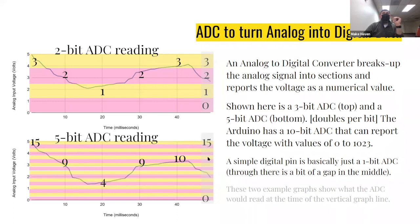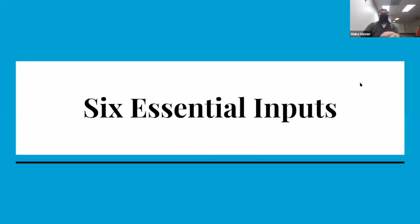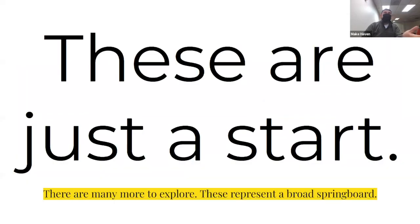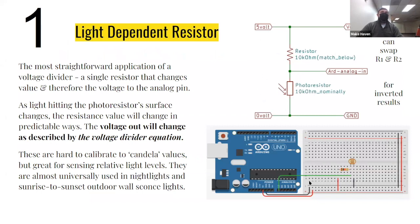Now let's talk about the six essential inputs — this is just the start; there are tons of things to explore. First is the light dependent resistor. In TinkerCAD you can see a photoresistor — it changes resistance based on the amount of light hitting it — in series with a fixed resistor. That fixed resistor is always the same, and the mathematical relationship is exactly the voltage divider we just discussed. The Arduino reads different outputs as the light level changes.